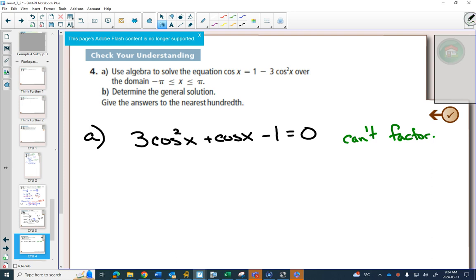So we go to our formula sheet, and on our formula sheet it says for ax² + bx + c = 0, x is equal to negative b plus or minus...